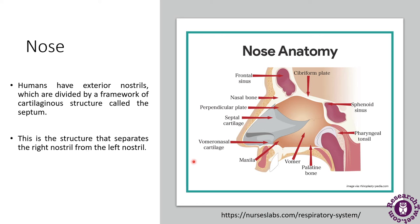The nose has tiny hair follicles that cover the inner lining — the interior lining — of the nostrils. These act as the first line of defense against foreign pathogens and they provide additional humidity for the inhaled air.